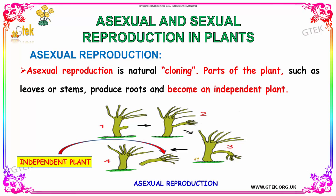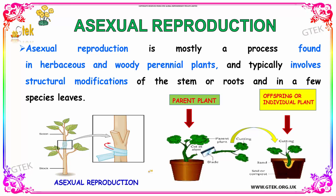Now we are going to discuss about Asexual Reproduction. Asexual Reproduction is a natural cloning process. Parts of the plant such as leaves or stems produce roots, and these roots become an independent plant. Asexual Reproduction is mostly found in herbaceous and woody perennial plants. It typically involves structural modification of the stem or roots, and in a few species, leaves. You can see the depiction here, showing the parent plant and the resulting individual plant.